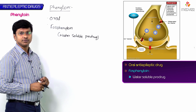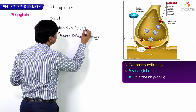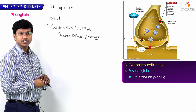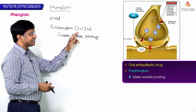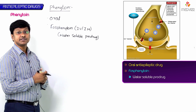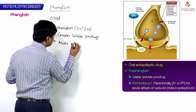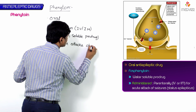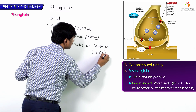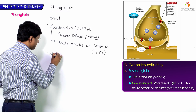The route of administration of phenytoin is oral, whereas fosphenytoin is administered via intravenous or intramuscular route. Fosphenytoin is used for the treatment of acute attacks of seizures in case of status epilepticus.